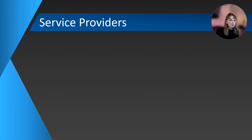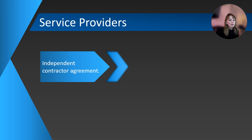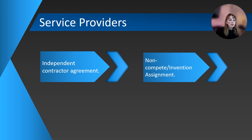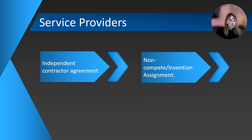Let's go over the documents you need to have on hand to contract with service providers. The Independent Contractor Agreement, used for consultants and advisors, is used for service providers that are not employees — also called 1099 service providers. This document details the term of the services, the services to be provided, and their rate of pay, if applicable, among other things. Each service provider must sign a non-compete invention assignment agreement to ensure that the service provider maintains confidentiality, appropriate IP ownership, and will not compete with the company.